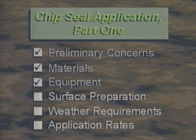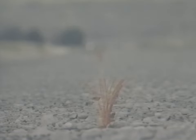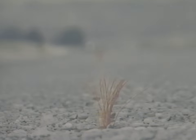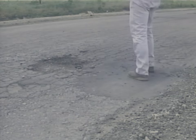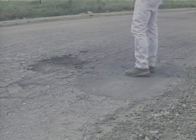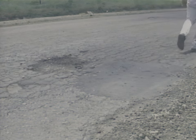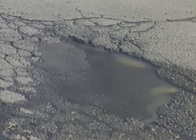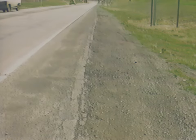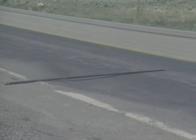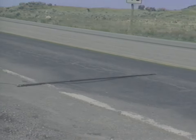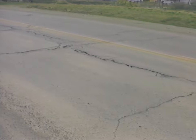Now let's look at surface preparation. That surface may be an aggregate base, a previous surface treatment, or a plant mix course. Part of surface preparation is the initial inspection of the road to assess its condition and determine if a seal coat is the proper maintenance treatment to use. Drainage conditions should be part of this initial inspection. See that any problems are corrected before application of the chip seal. Chip seals are not recommended for treating potholes, rutting, bleeding, corrugations, or severe or extensive cracks. Even when such problems are isolated, they must be repaired before chip sealing.